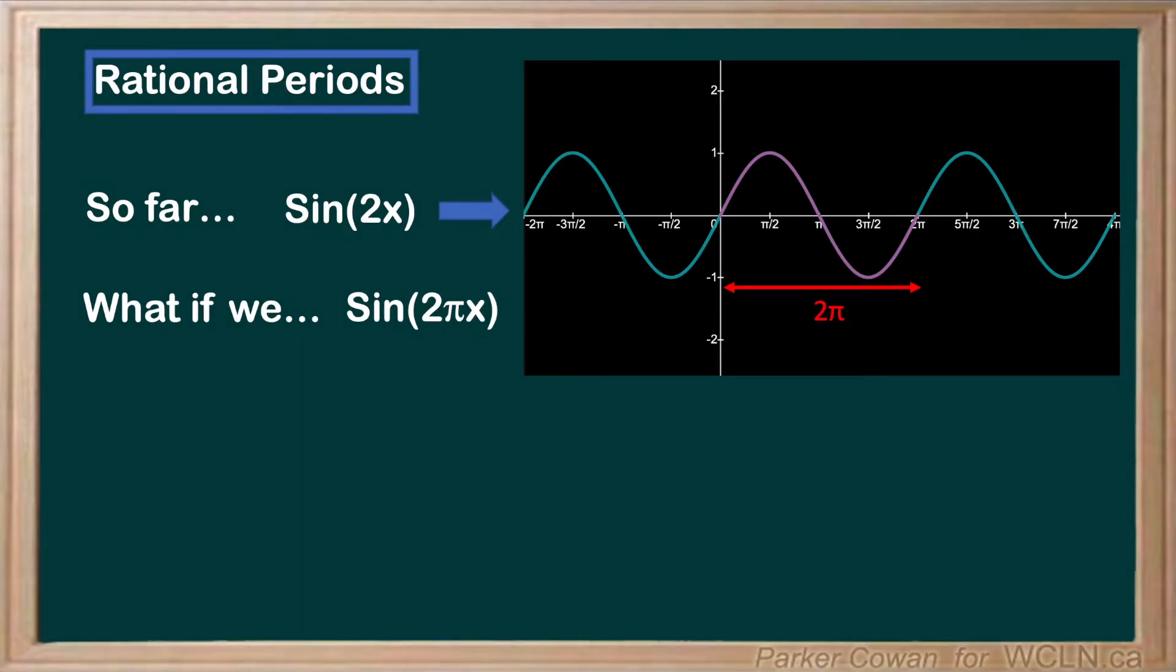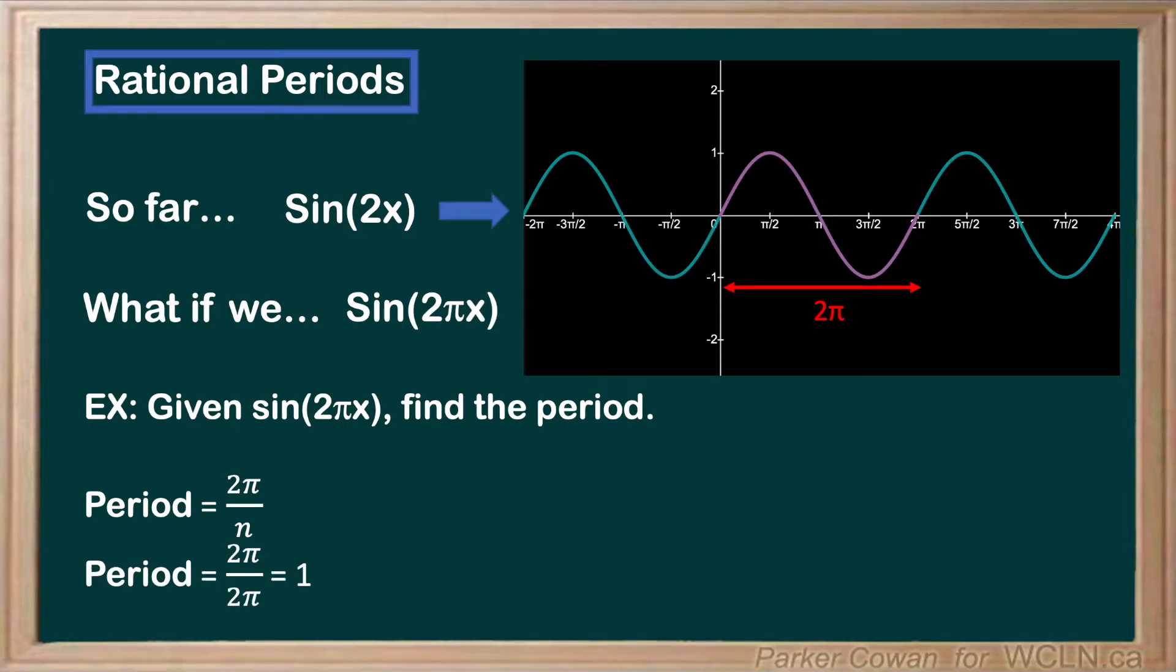Let's take a look at an example. Given sine of 2πx, find the period. So applying our formula for calculating period, we take 2π and divide by our coefficient, which in this case is also 2π.